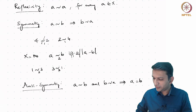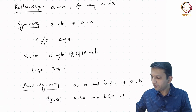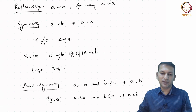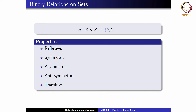We all know that the usual order on N has the anti-symmetry property. That means if a ≤ b and b ≤ a, then a equals b. Finally, the property of transitivity says that if a is related to b and b is related to c, then we should be able to imply that a is related to c. Clearly, the divisibility relation is transitive, and so is the parity relation.